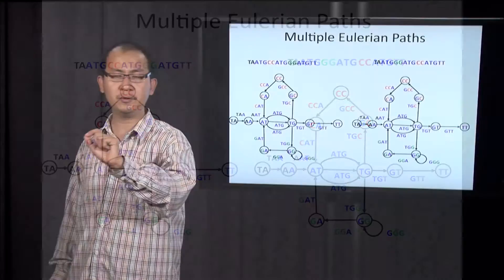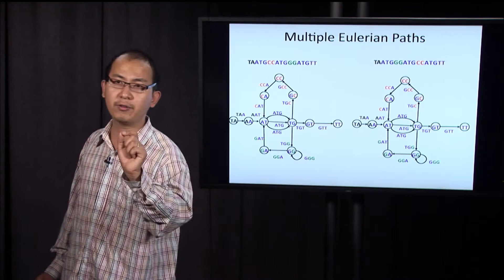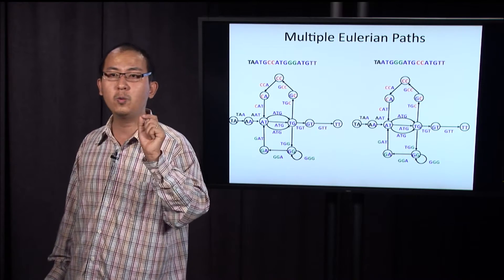And these two Eulerian paths correspond to two different strings. Which string are you going to give to biologists? The left one, or the right one, or both? Please note that we sequence only one genome.